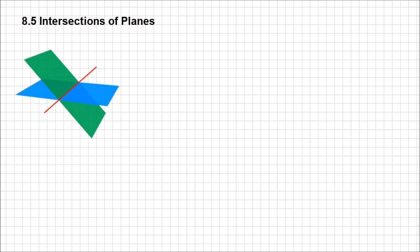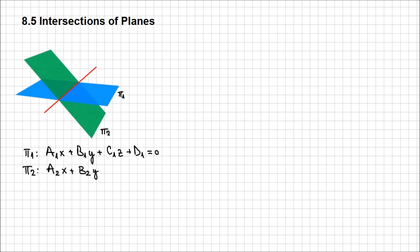If you were to determine if these two planes are intersecting based on the system of equations determined by the scalar equations of these two planes — for example, π₁ given by a₁x + b₁y + c₁z + d₁ = 0, and π₂ given by a₂x + b₂y + c₂z + d₂ = 0 — this system of equations is going to have an infinite number of solutions. From this system of equations of the planes, you will be able to determine the equation of this intersection line.